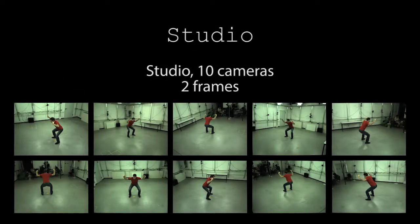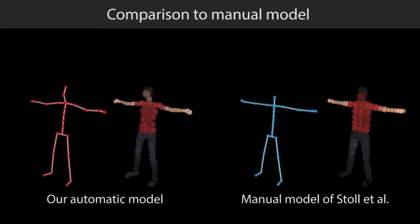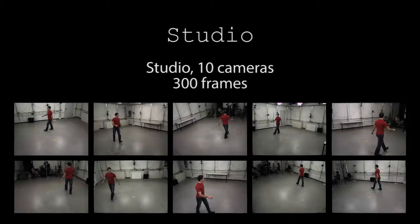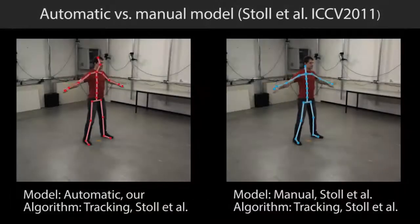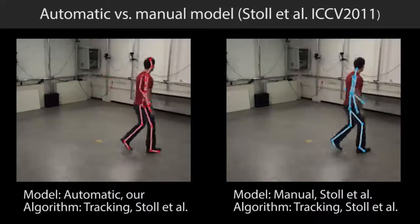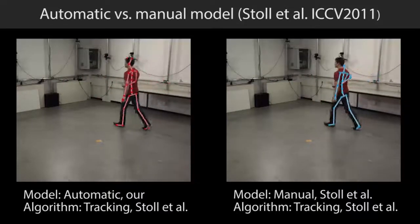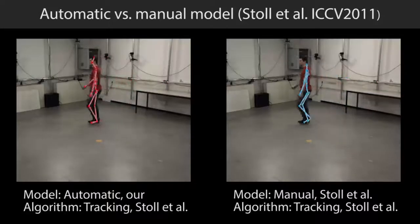We now show results using ten cameras and only two frames. Despite the limited amount of data, we can faithfully estimate the body shape and pose. Notice that our automatic model better represents the torso shape. We compare the results of the tracking algorithm of Stoll and colleagues using our automatically initialized model and their manual model. Here we show tracking results with the method of Stoll et al. using our model on the left and their manual model on the right.